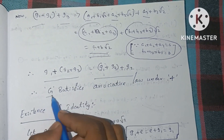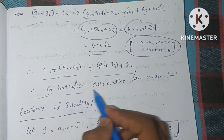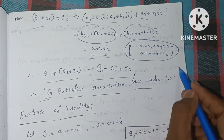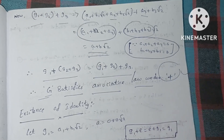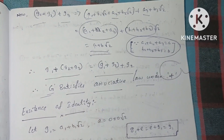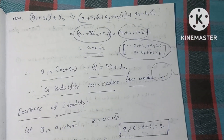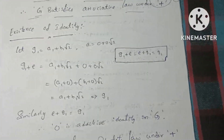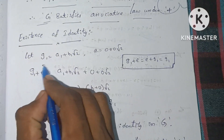Therefore, G satisfies the associative law under binary operation.